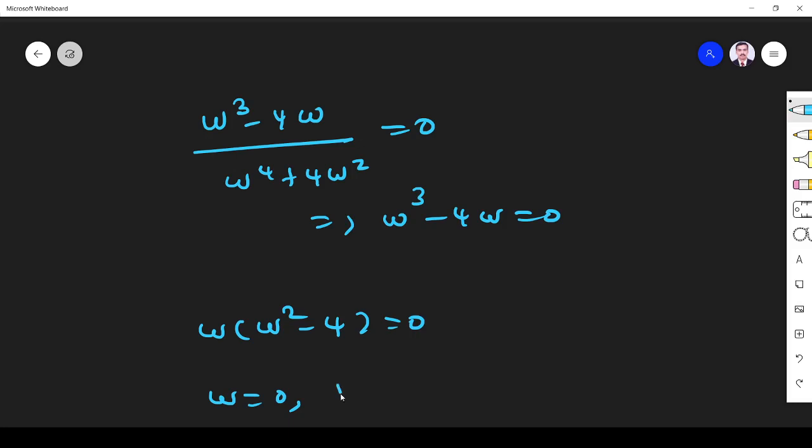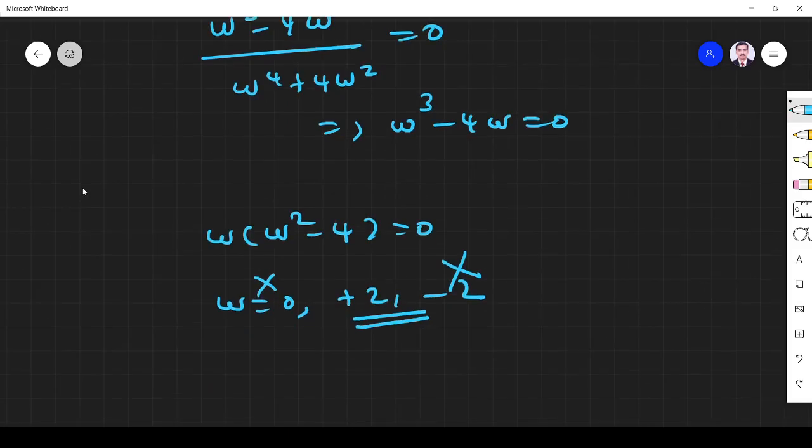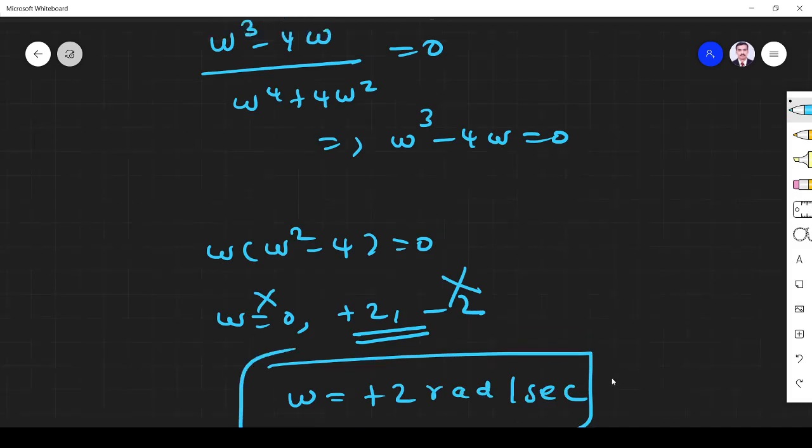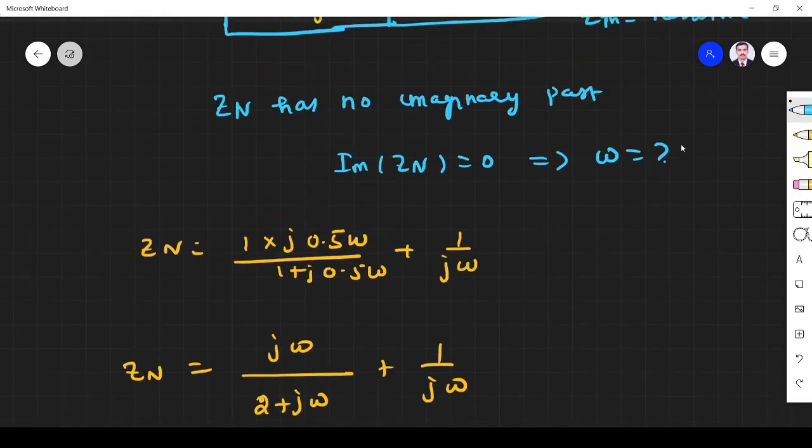ω(ω² - 4) = 0. So ω = 0 or ω² = 4, which gives ω = ±2. We cannot take zero—frequency cannot be zero. And ω cannot be negative, so frequency should be positive. We are not taking zero because for any condition it would be applicable. So ω = +2 radians per second.